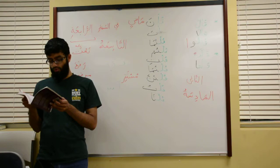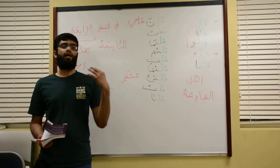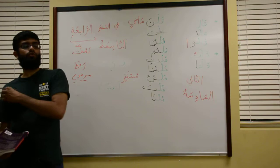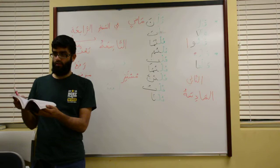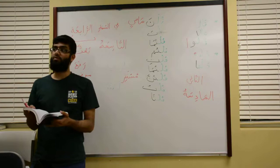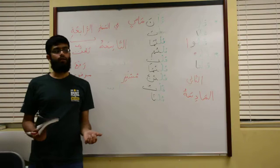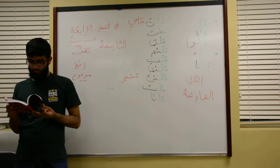Example: Aina Bilalun wa Hamidun wa Khalidun? Zahabu ilal suqi. So if you're listing a bunch of people and want to say they went, you just add a waw — zahabu — and that refers to all of them. Similarly, zahabna ilal maktabi for a feminine group.